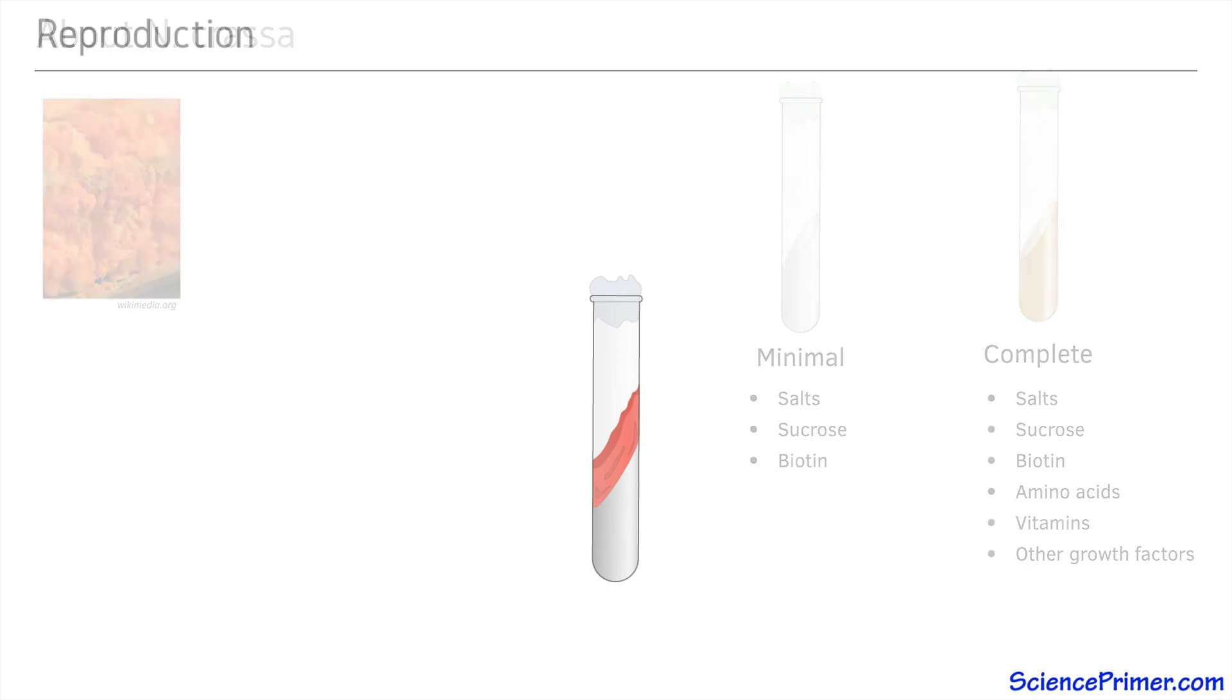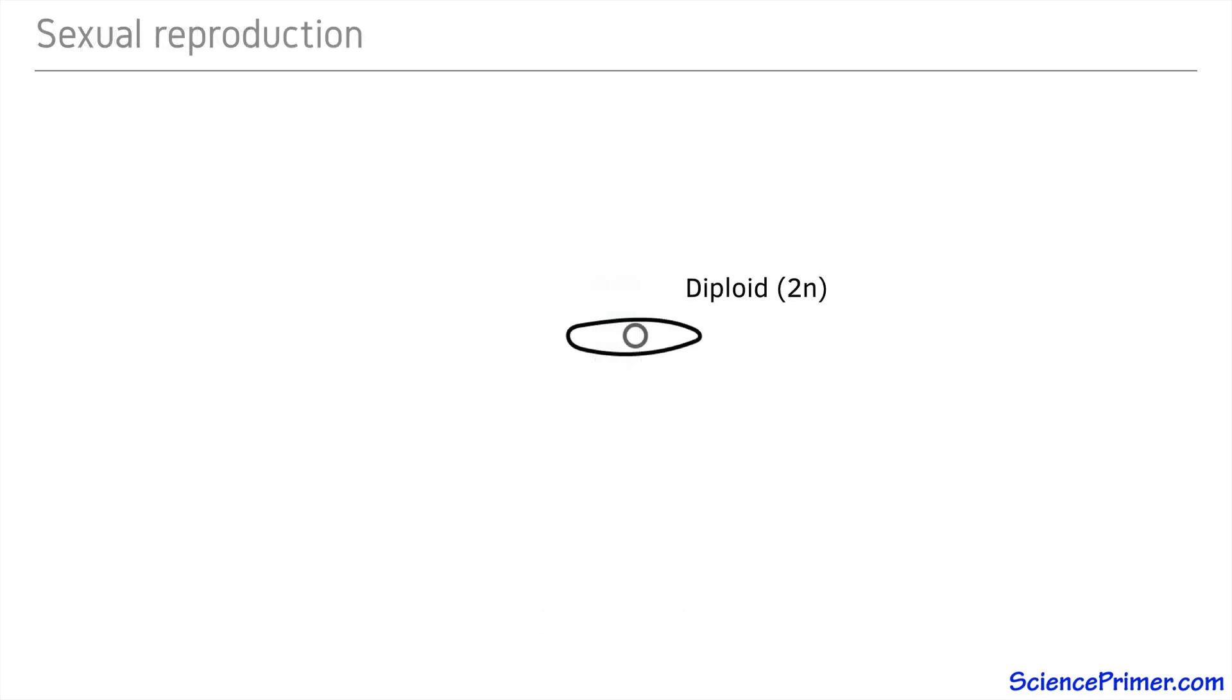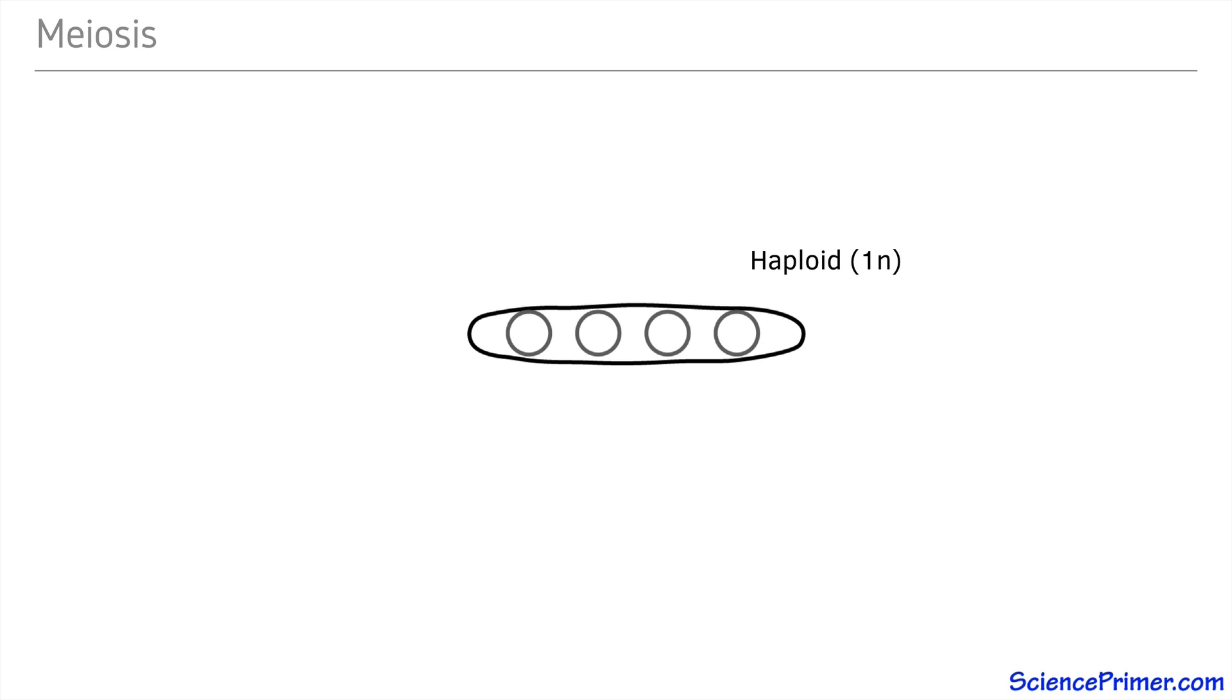The genetics of Neurospora species also make them useful. Normal cultures of Neurospora are haploid. During sexual reproduction, a diploid zygote is formed, which then undergoes meiosis, resulting in a set of four haploid cells.